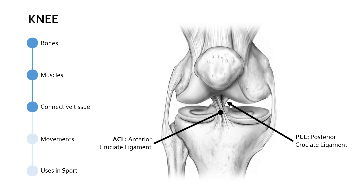The ACL and PCL also prevent rotational movement — medial or lateral — beyond what the knee joint can cope with. So they are stabilising the knee joint in place.